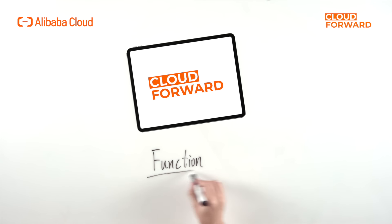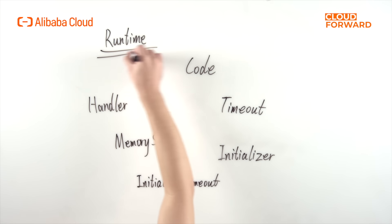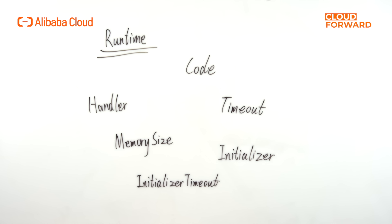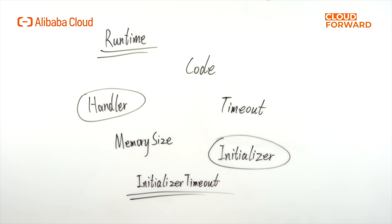Now let's take a look at the concept of Function. Functions are the core concept in Function Compute and are the basic unit of management and operation. A function is usually composed of a series of configurations and a runnable code package. The configuration of a function includes: runtime, which is the environment type in which the function runs; code, which is the function code package; handler, which is the entry function; timeout, which is the function timeout; memory size, which is the memory allocated for the function execution environment; initializer, which is the initialization function; and initializer timeout, which is the maximum running time of the initializer function.